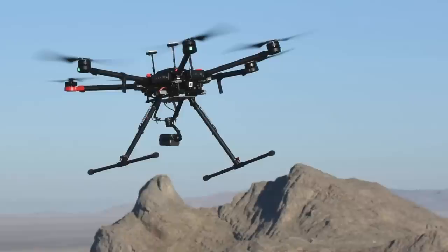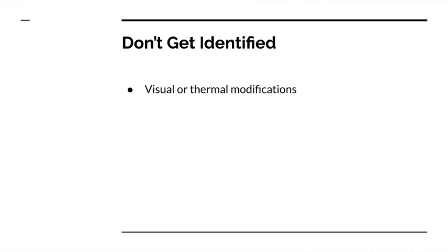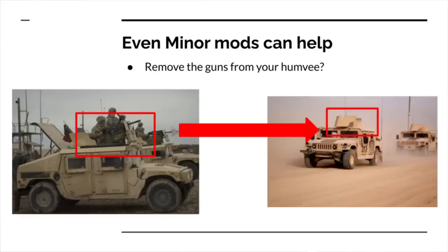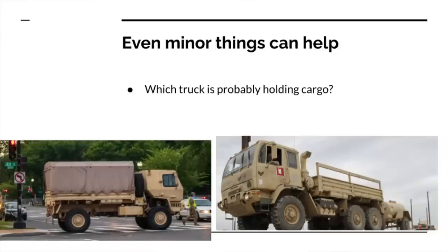If you are acquired but not identified, you can use that as a survival strategy. Visual or thermal modification of your vehicle can help prevent identification — even something as simple as removing your guns from the vehicle when you're in the rear. Your vehicle might look less likely to be attacked the less critical it looks. Which makes a better target for a drone-delivered munition — a truck with stuff in it or a truck without? If you have the tarp on, you can't tell if there's stuff in it. Taking a few minutes to remove the tarps could save your life as the bad guy looks for a juicier target.